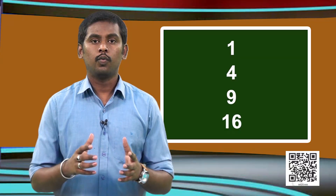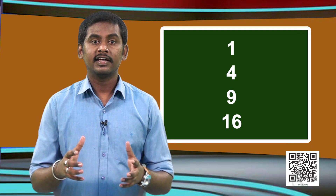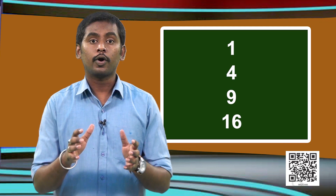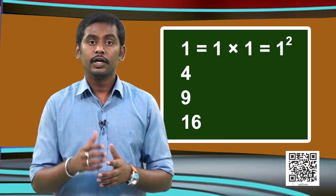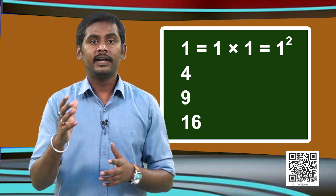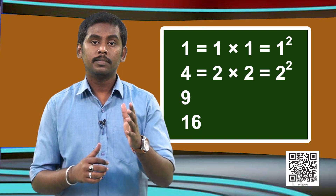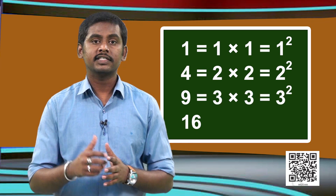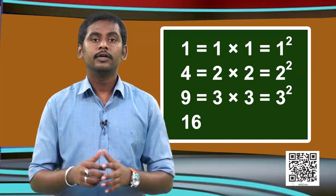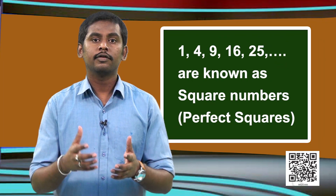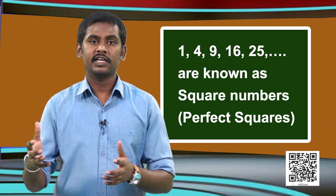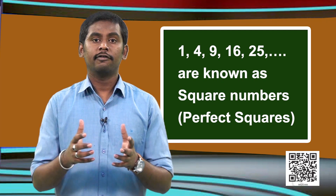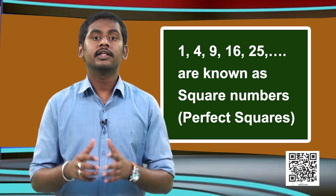If we observe all these numbers 1, 4, 9, 16, we can observe that all these numbers could be written as a product of the same number. That is, 1 can be written as 1×1, 4 as 2×2, 9 as 3×3. So all these numbers such as 1, 4, 9, 16, 25 and so on — we call these numbers as the square numbers. In fact, we can also call them perfect squares.